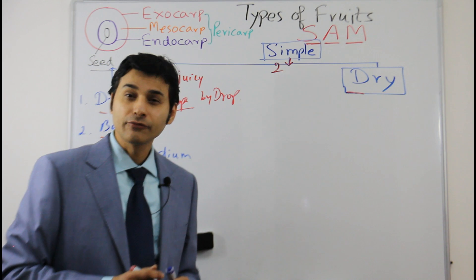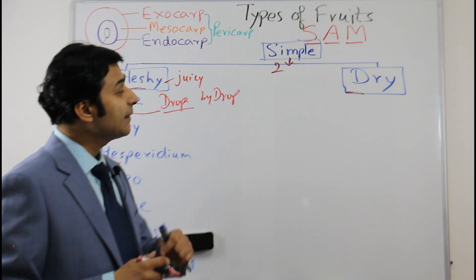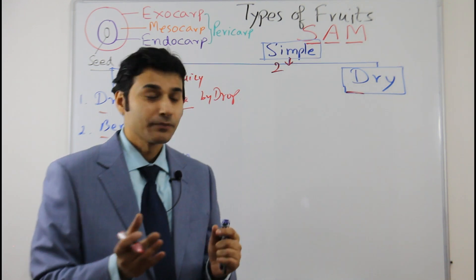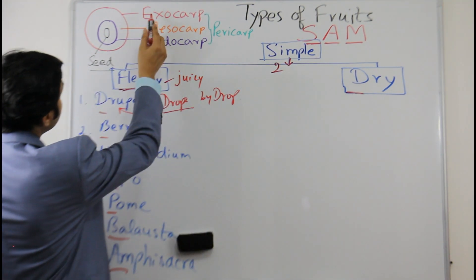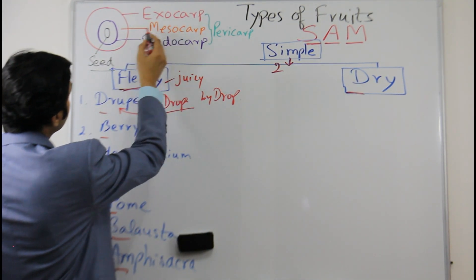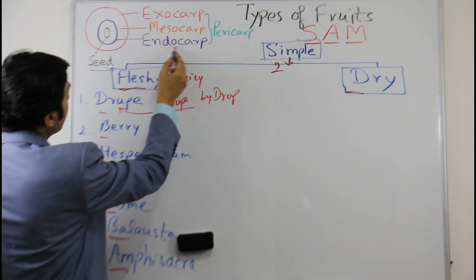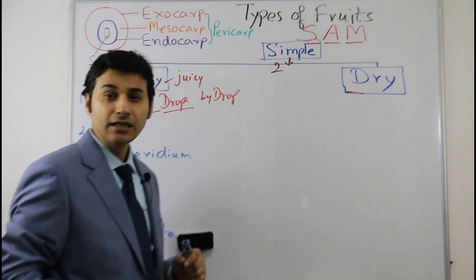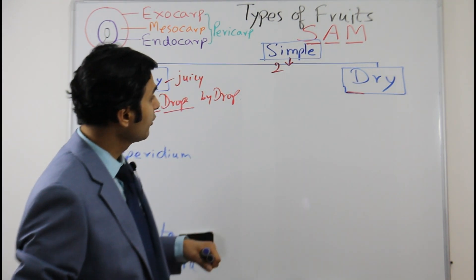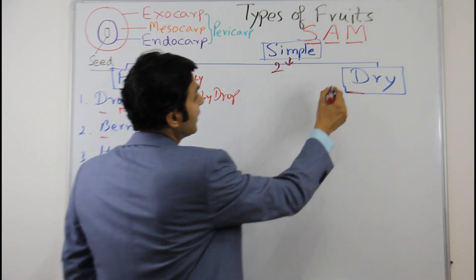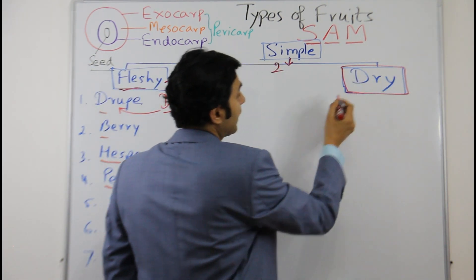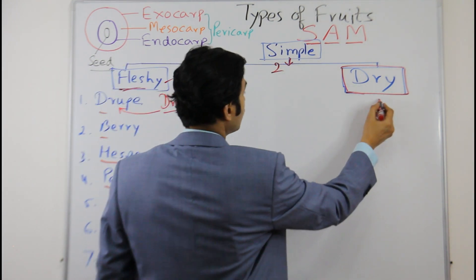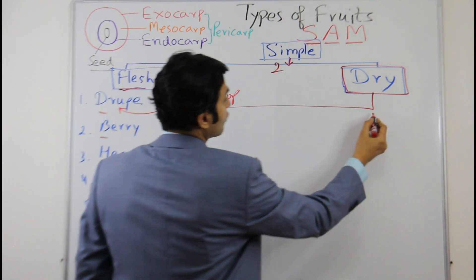The other type of simple fruit is dry. The name itself tells you that the pericarp is dry. As you know, the fruit has three layers: exocarp is the outer layer, mesocarp is the middle layer, and endocarp is the inner layer which covers the seed inside. Dry fruit is divided into two types.